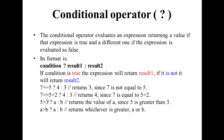The conditional operator example: 7 equals 5 plus 2. The condition is 4 colon 3. Since 7 is equal to 5 plus 2, this condition is true, so it returns the value 4.